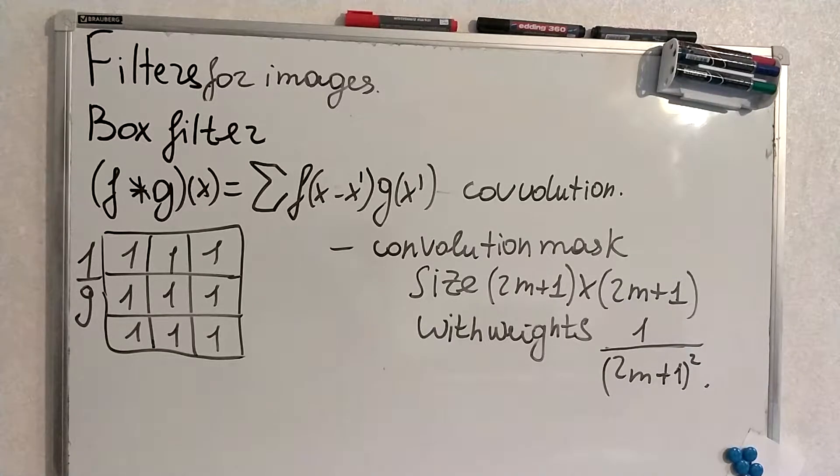And the box filter has a structure you can see on the left. For example, when we're in a pixel that's in the center of the mask, we will average the neighboring pixels, actually 8 of them.